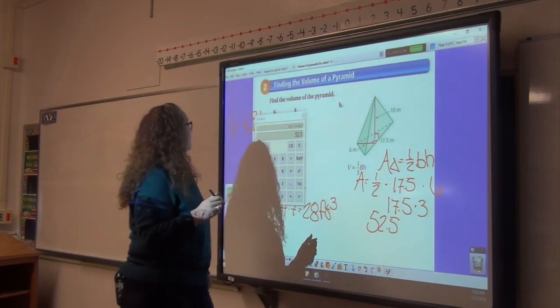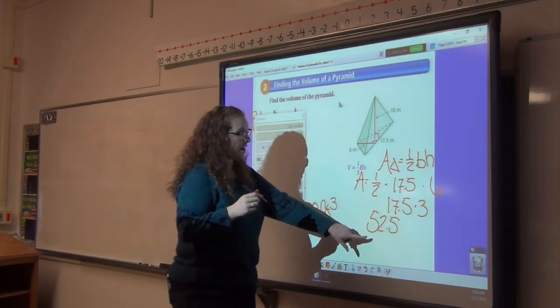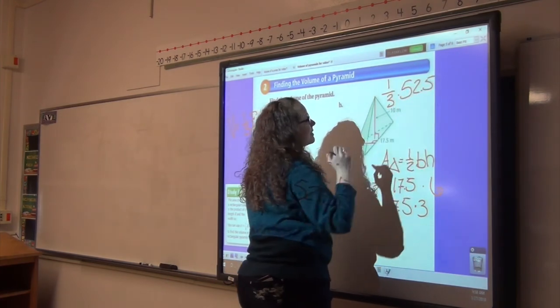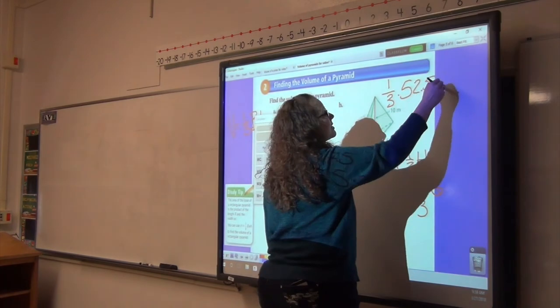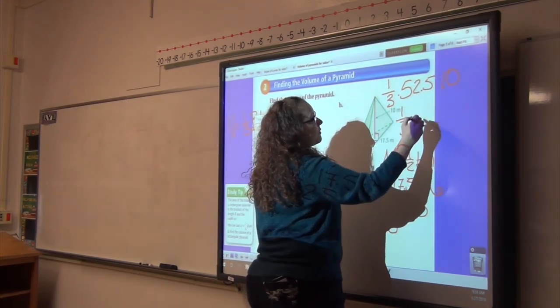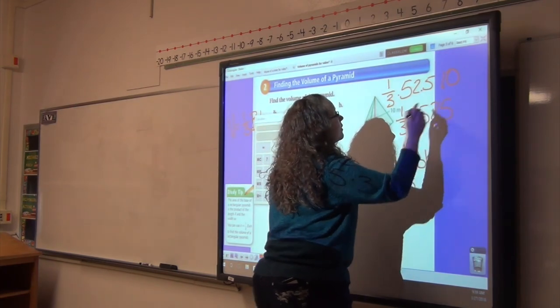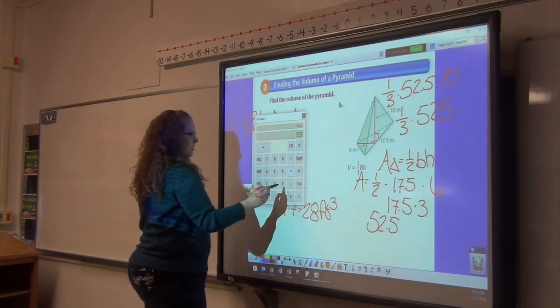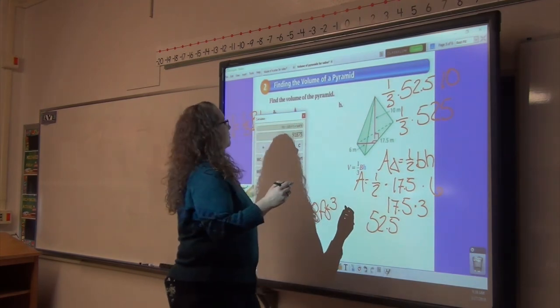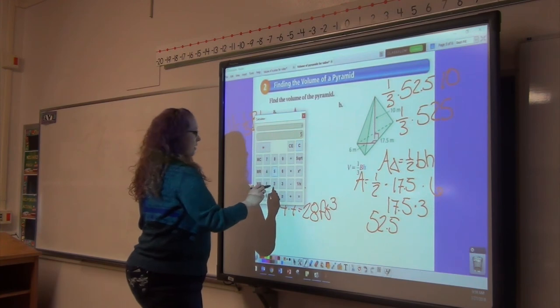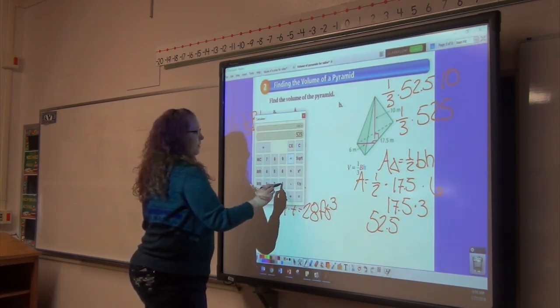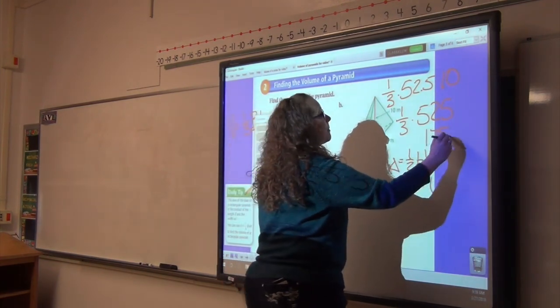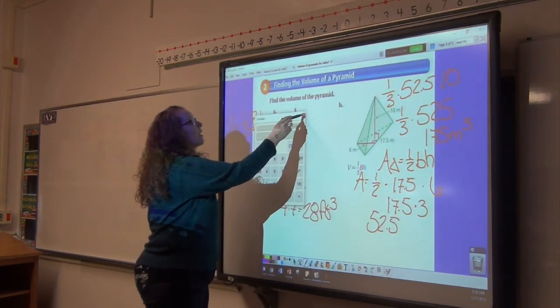Going back to our original equation, one third area of the base times height. Area of our base is 52.5, so it's one third times 52.5 times our height, which is 10. 52.5 times 10 is 525, and one third of 525... that is not right. Okay, 525 divided by 3, which is the same as multiplying by one third. We get 175 meters cubed for the volume of that pyramid.